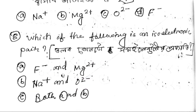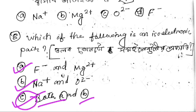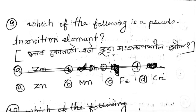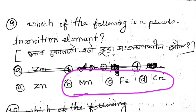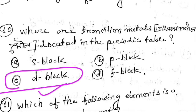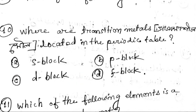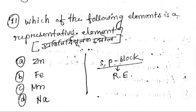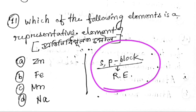Which of the following is a pseudo-transition element? Next question: which of the following elements is a representative element? The main group element is the main group element.